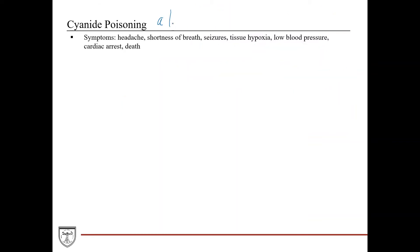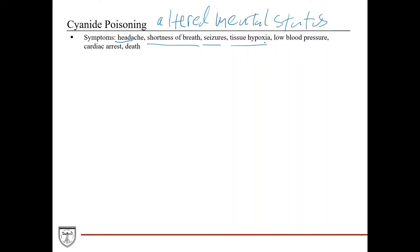For symptoms, you would see altered mental status. Cyanide poisoning really affects the central nervous system and the heart especially, because both of those tissues use a lot of oxygen and are crucial for life. If you cut off the oxygen supply, you'll see immediate neurological effects: altered mental status, headache, shortness of breath, seizures, and tissue hypoxia because you have decreased O2 use. Then you develop low blood pressure, and these patients can go into cardiac arrest because cardiac tissue requires high amounts of oxygen and really relies on aerobic respiration.